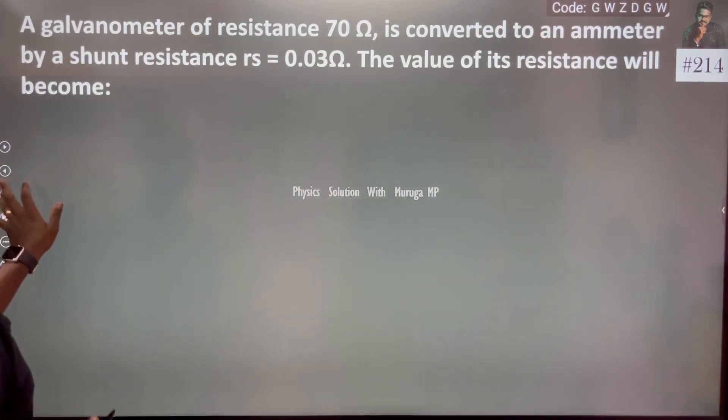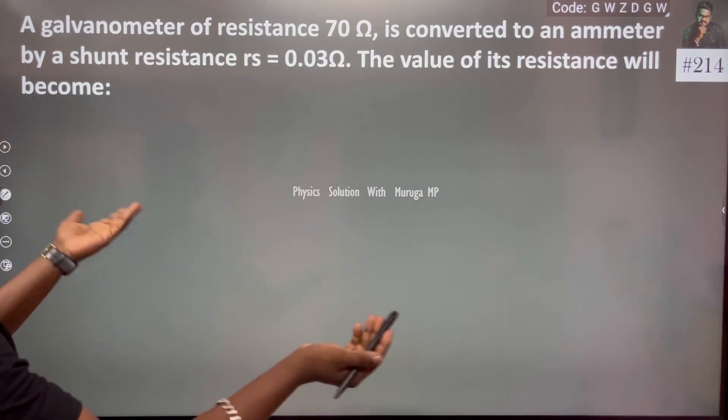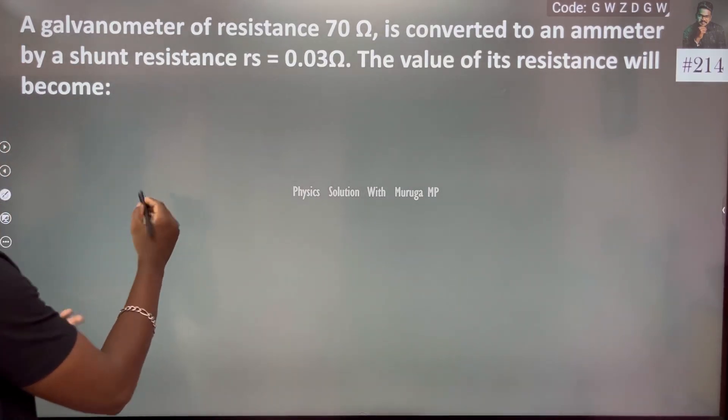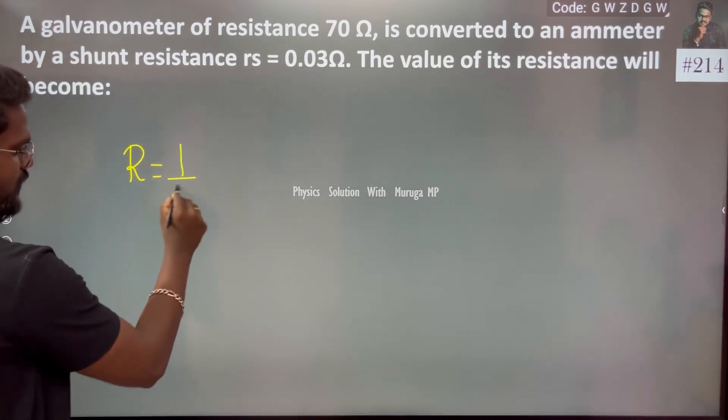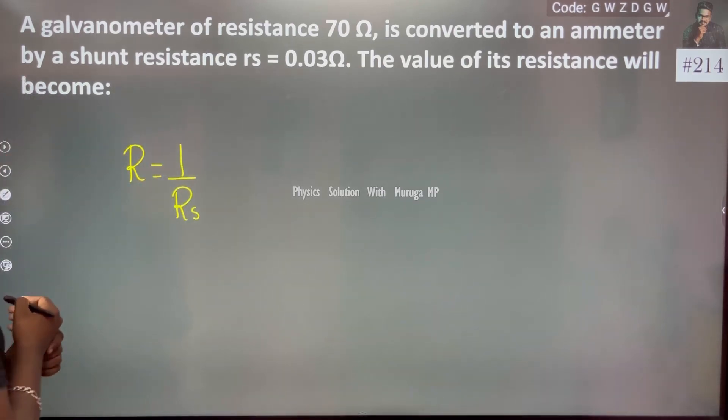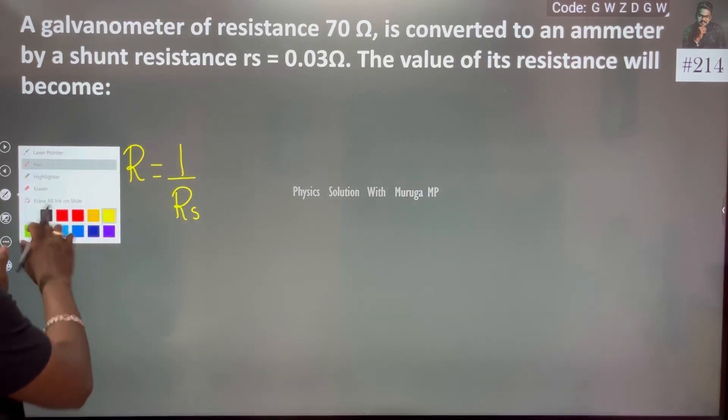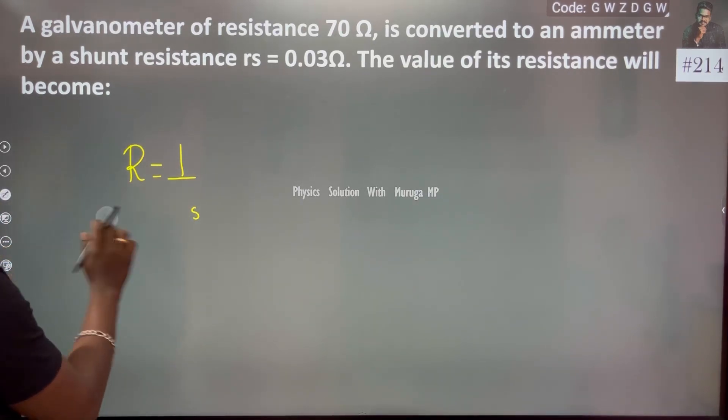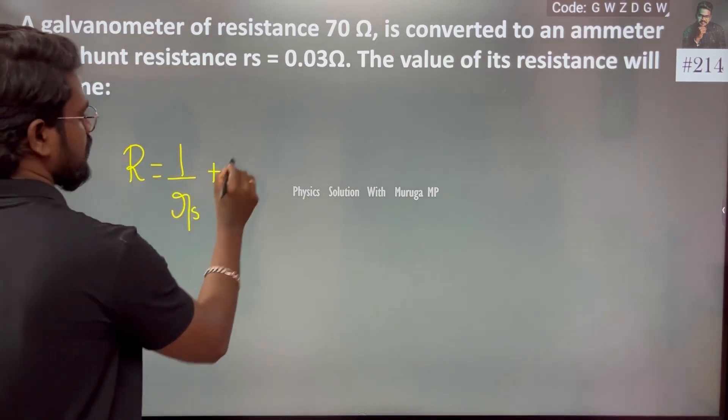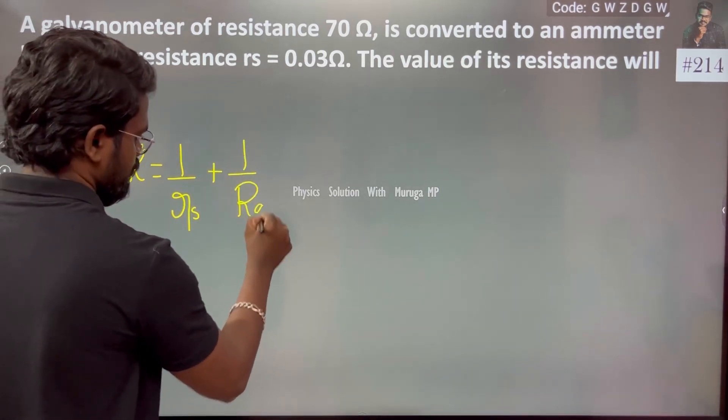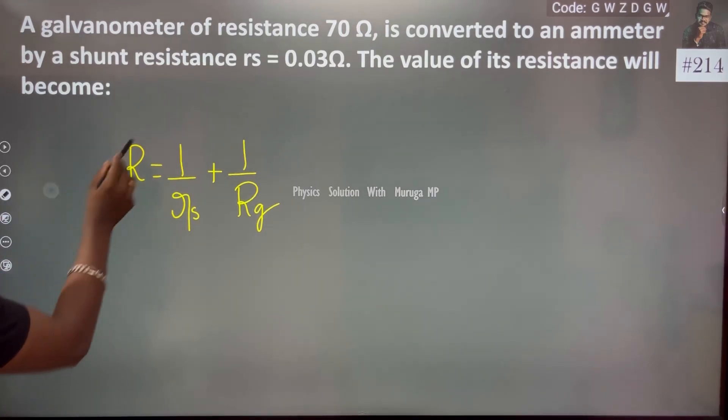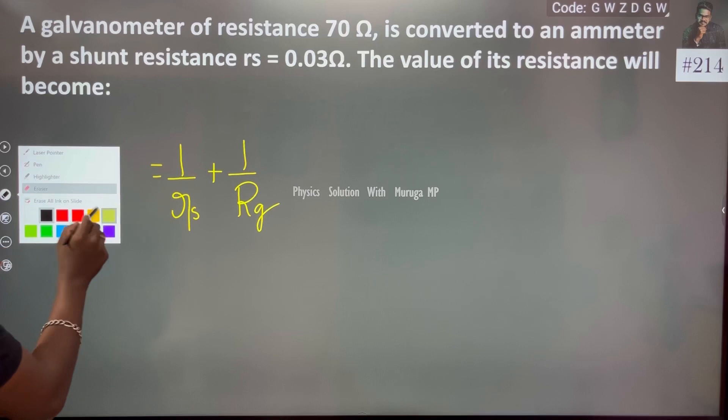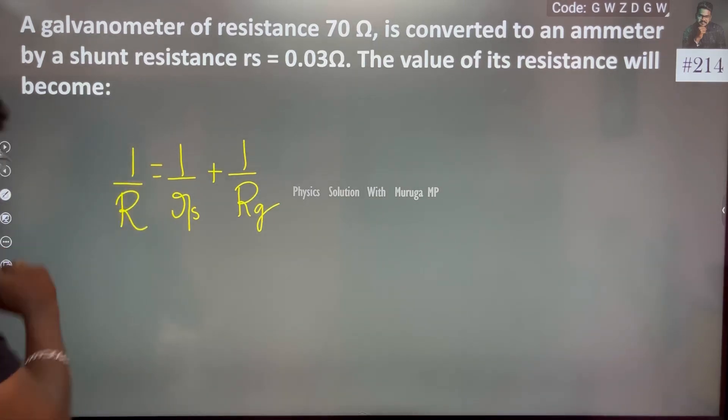The effective resistance R, which is nothing but 1 by rs - right, shunt resistance - so that is nothing but 1 by rs plus 1 by Rg. So this is my format, and of course this becomes 1 by R. Correct.